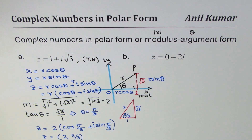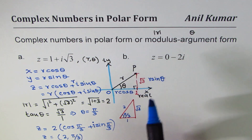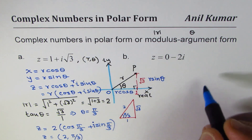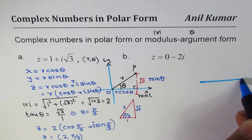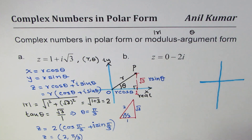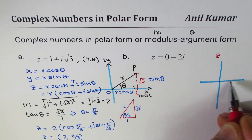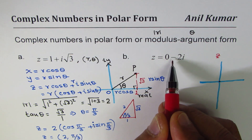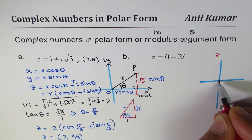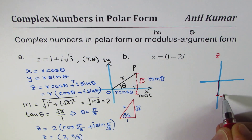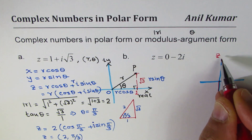Now let's do part b, where the complex number is z = 0 − 2i. Let me sketch this. The real part is zero so we don't move along the real axis, but −2i means we move two units down along the imaginary axis. So the point is at −2i on the imaginary axis.